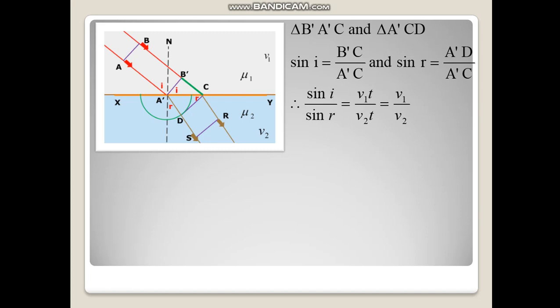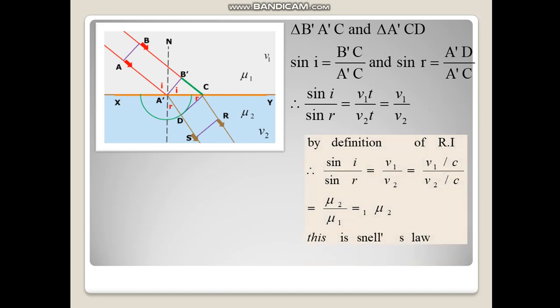Now let us take the diagram again. We have triangles B dash A dash C and triangle A dash CD. Sine I is equal to B dash C upon A dash C, and Sine R is equal to A dash D upon A dash C. Therefore Sine I by Sine R is equal to V1 T upon V2 T, that is equal to V1 upon V2. We divide by C on both places — V1 upon C and V2 upon C — so we get mu2 with respect to air upon mu1 with respect to air, that is mu2 with respect to 1. This is Snell's law, proved using Huygens' principle.